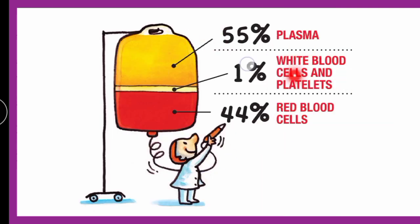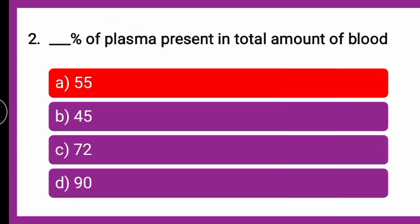If you talk about the composition, this cartoony image gives a very nice explanation about the percentage of constituents present in blood. The yellowish transparent liquid you can see here is 55% plasma. Then, 1% constitutes WBCs and platelets, and the remaining 44% is RBCs, which imparts color to the blood. So the plasma percentage is 55% of the total blood.